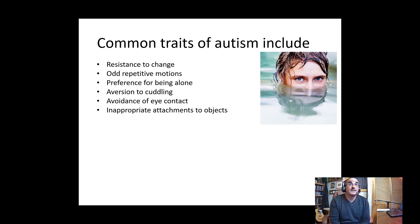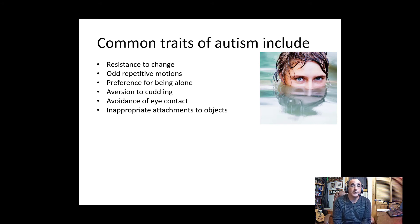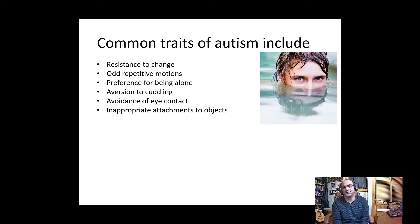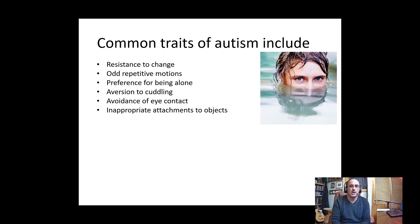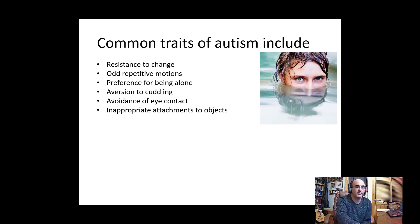People with autism sometimes have an inappropriate attachment to certain objects — objects tied to their particular sensory preferences or interests. Especially as young teenagers grow older, they may continue to have objects that are not age-appropriate or that carry meaning for them that others may not understand or may find uncomfortable. This is certainly something to be aware of.